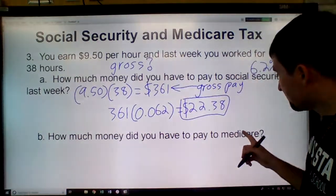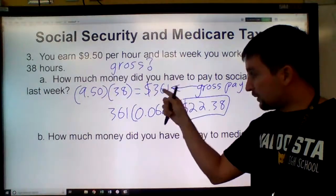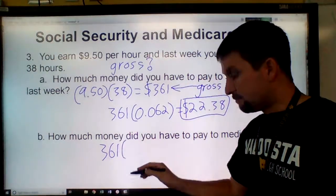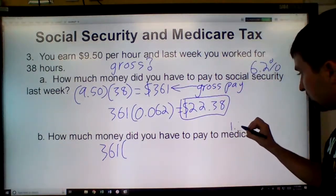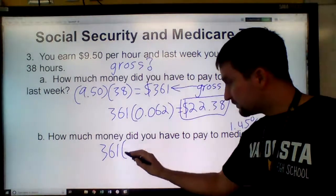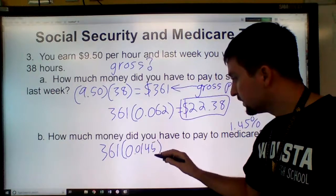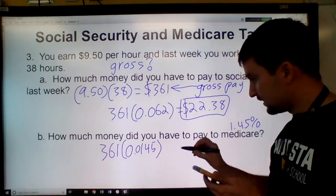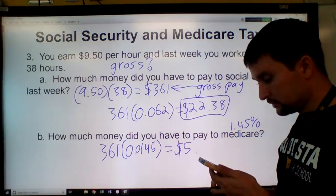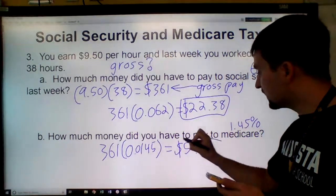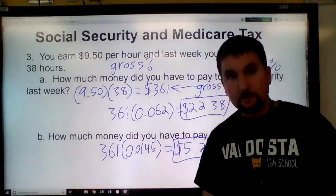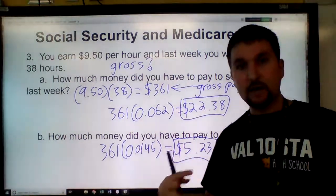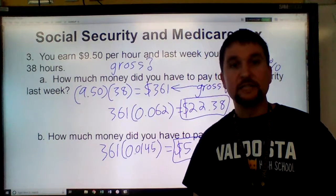How much money did you have to pay in Medicare? Now we know the gross pay is $361, so just multiply it by the Medicare tax rate, 1.45%, which is 0.0145. Multiply 361 times 0.0145 and that gives you about $5.23 — I had to round that. So that's the gist of how to calculate your Social Security and how to calculate your Medicare. Try these problems, and if you have trouble, just ask for help.